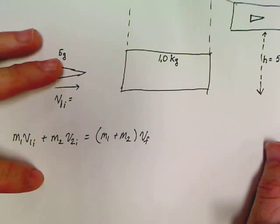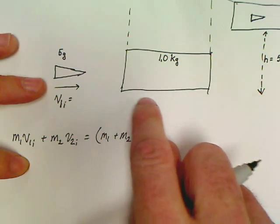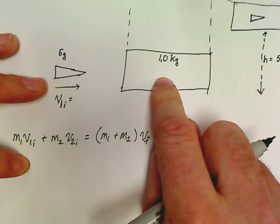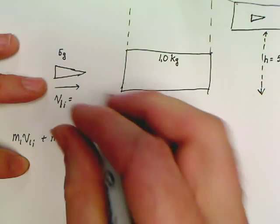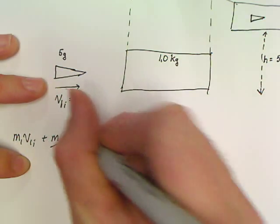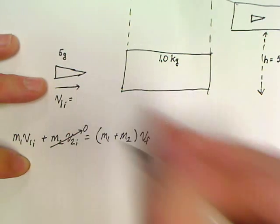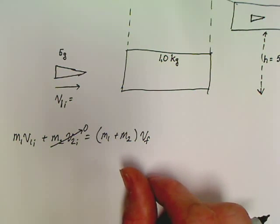Now, we've got a couple things. One thing that's making this problem easier. This block is not moving initially. The block is just sitting here, which means that V2 initial is 0. Therefore, that's 0, so we can just mark all that out of the problem.